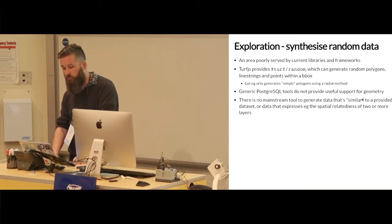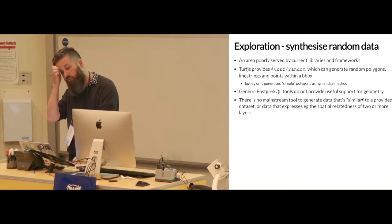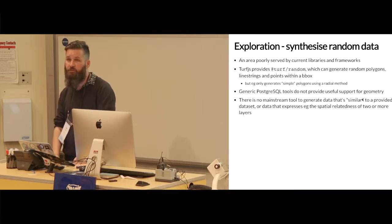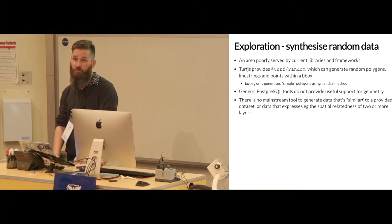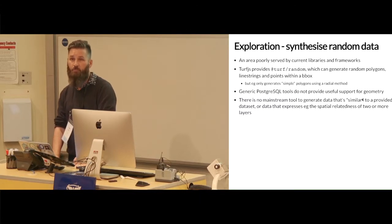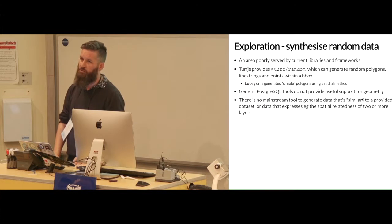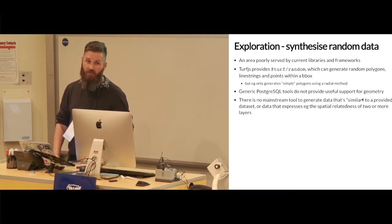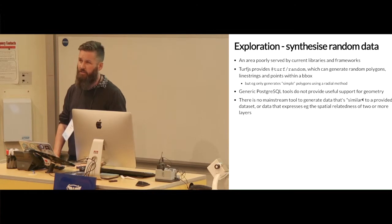There are some very basic tools. Turf.js provides turf random which uses a radial method to generate polygons. If you go on gis.stackexchange and you ask how do I generate random geometries in PostGIS, the answers are not rolled gold at the moment. There is some basic point generation stuff and then there are some kind of ad hoc or simplistic methods for generating geometry, but the geometries that are generated are nothing at all like the ones that you have in real life, especially in that subtle way where they relate to one another.